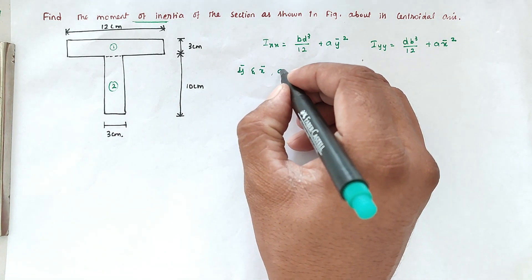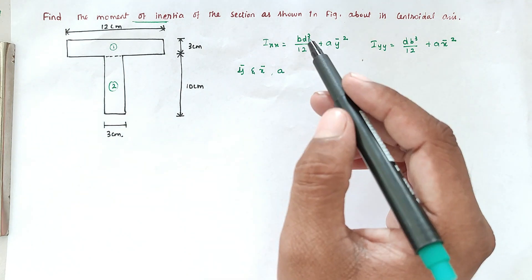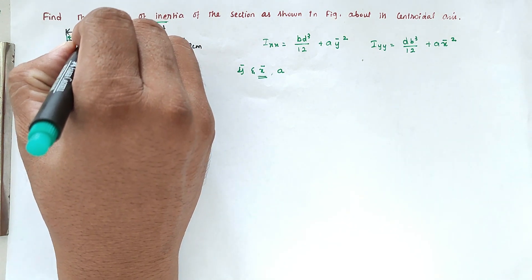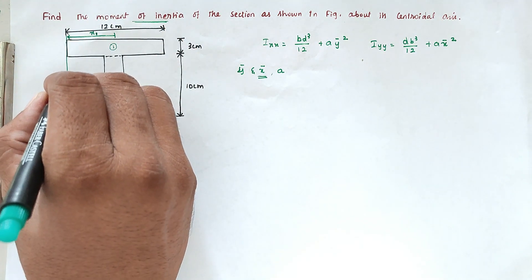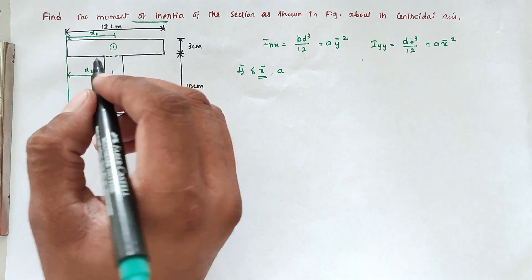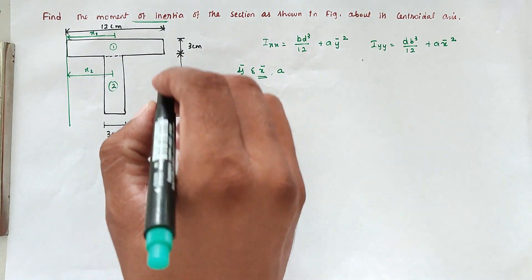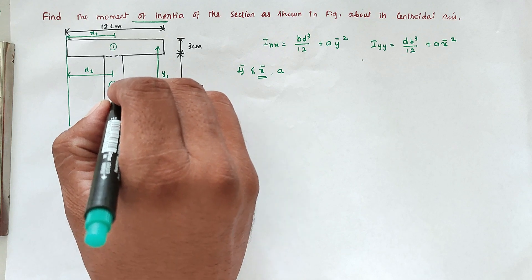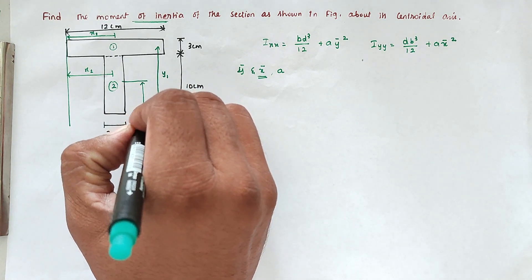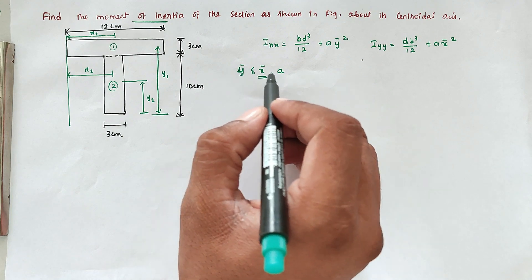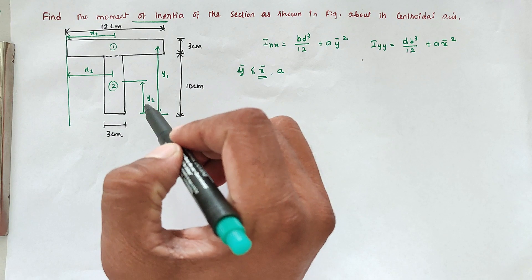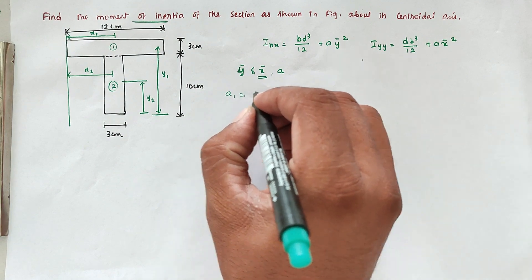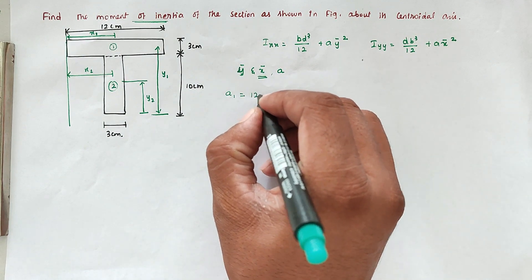To apply these formulas, we first need to find ȳ and x̄. This is the central axis. From it, we define x1 and x2, as well as y1 and y2, to find the centroid coordinates x̄ and ȳ for both sections.